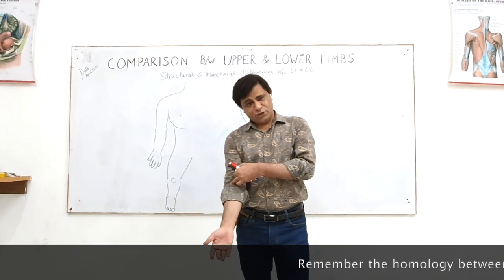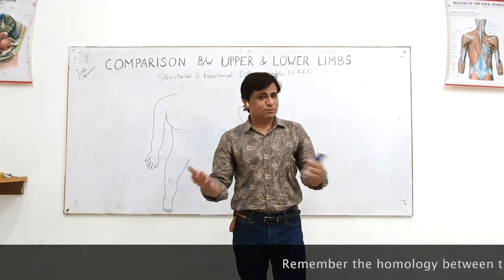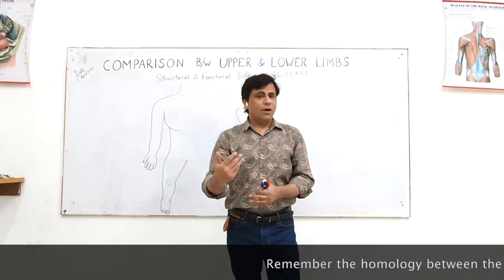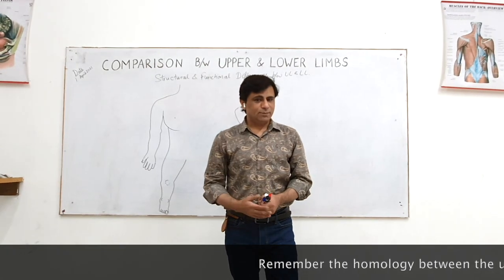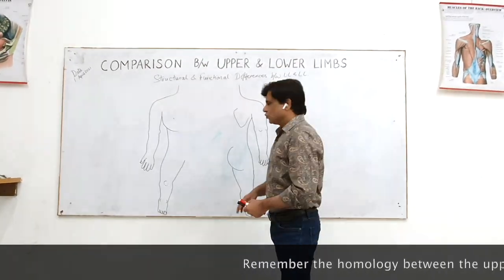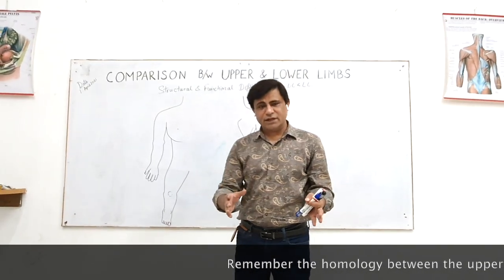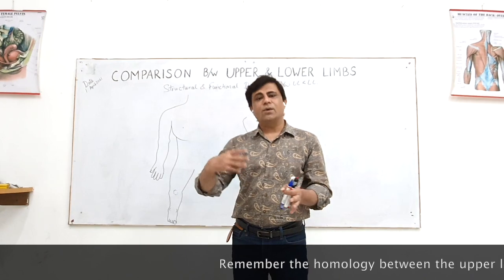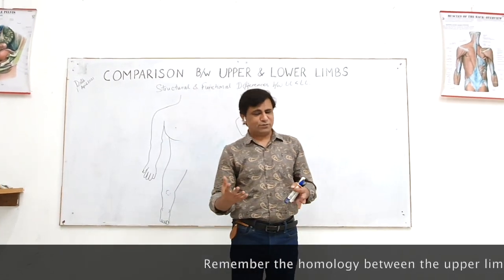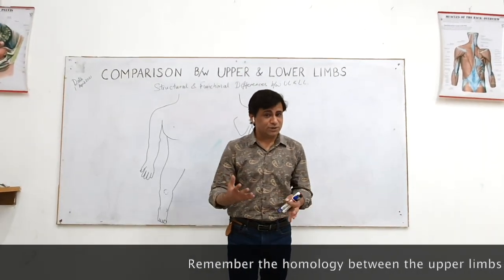The cubital fossa is homologous to the popliteal fossa, but they are 180-degree opposite fossae. Because the compartments are getting changed, the functions of flexion and extension will also be changed.